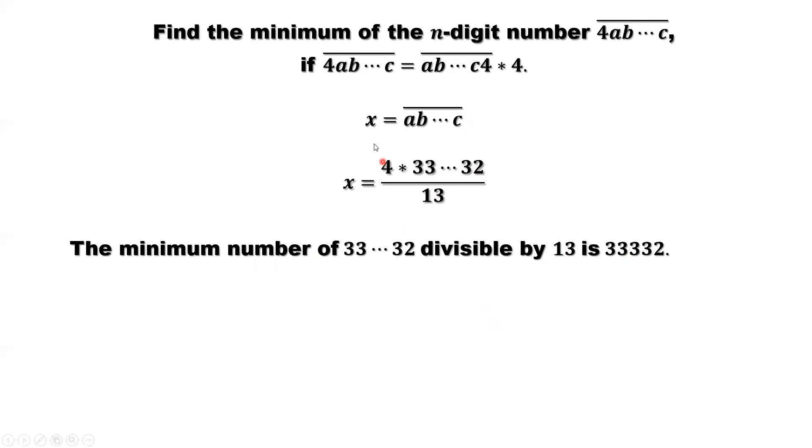We change the problem. We want to find the minimal number 4abc. Right now we need to find this number divisible by 13, the minimum. It's equivalent because 4 and 13 are relatively prime, or mutually prime. How to get this number? We can use long division. It's easy to get this number. This is the minimum. Here we don't know how many satisfy the minimum condition.